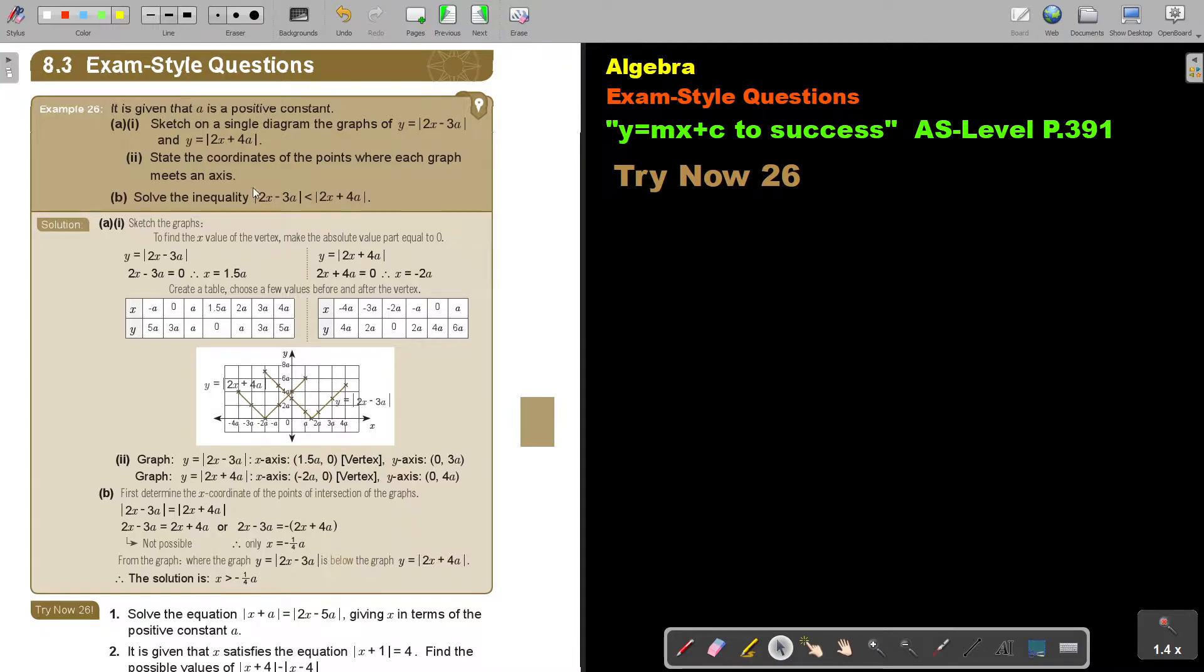We will first look at an absolute value example. Let's start. It is given that A is a positive constant. Keep it in mind. Sketch a single diagram the graph of Y equals 2x minus 3a and Y equals 2x plus 4a. Now this is a bit challenging because of the variable in it, but let's see how we approach it.